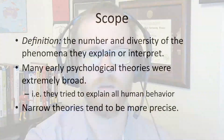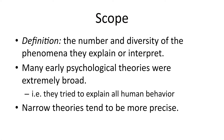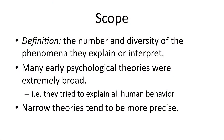The second dimension, scope, refers to the number and diversity of the phenomena that the theory explains or tries to interpret. Many early psychological theories were extremely broad in their scope. Sigmund Freud is famous for having theories that can be used to explain basically everything — not just how the human mind works but even human civilization. On the other end of the spectrum, a narrow theory only explains a particular behavior or a particular kind of feeling or thought.